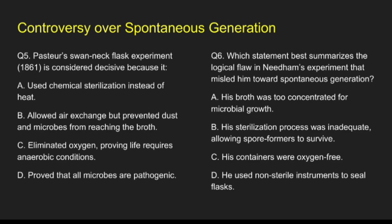Question 5: Pasteur's swan neck experiment in 1861 is considered decisive because it — Option A, used chemical sterilization instead of heat; Option B, allowed air exchange but prevented dust and microbes from reaching the broth; Option C, eliminated oxygen; Option D, proved that all microbes are pathogenic. The correct answer is option B. In his swan neck experiment, the neck was S-shaped, trapping all airborne microbes so that the broth remained sterile while air could freely enter, disproving spontaneous generation.